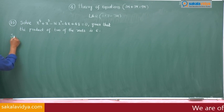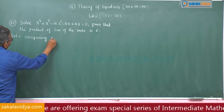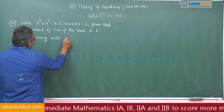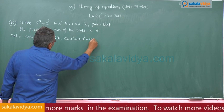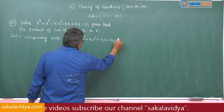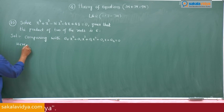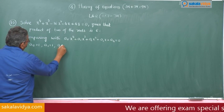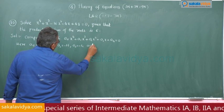Solution: comparing with the standard form A0 x to the power of 4 plus A1 x cubed plus A2 x squared plus A3 x plus A4 is equal to 0. Here, A0 is equal to 1, A1 is equal to 1, A2 is equal to minus 16, A3 is equal to minus 4, and A4 is equal to 48.